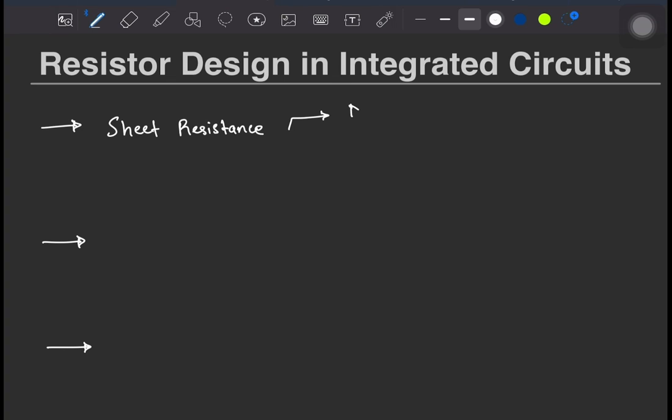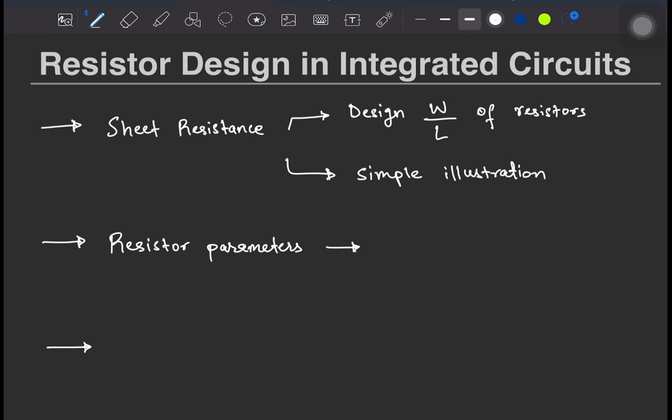We'll begin with a discussion regarding the sheet resistance and designing W by L of resistors through a simple illustration. Next, there are a couple of parameters that one must look at before deciding on which resistor to use from the handful of flavors that a modern PDK or PCD provides. We'll look at the most commonly used parameters by IC designers and understand their significance.